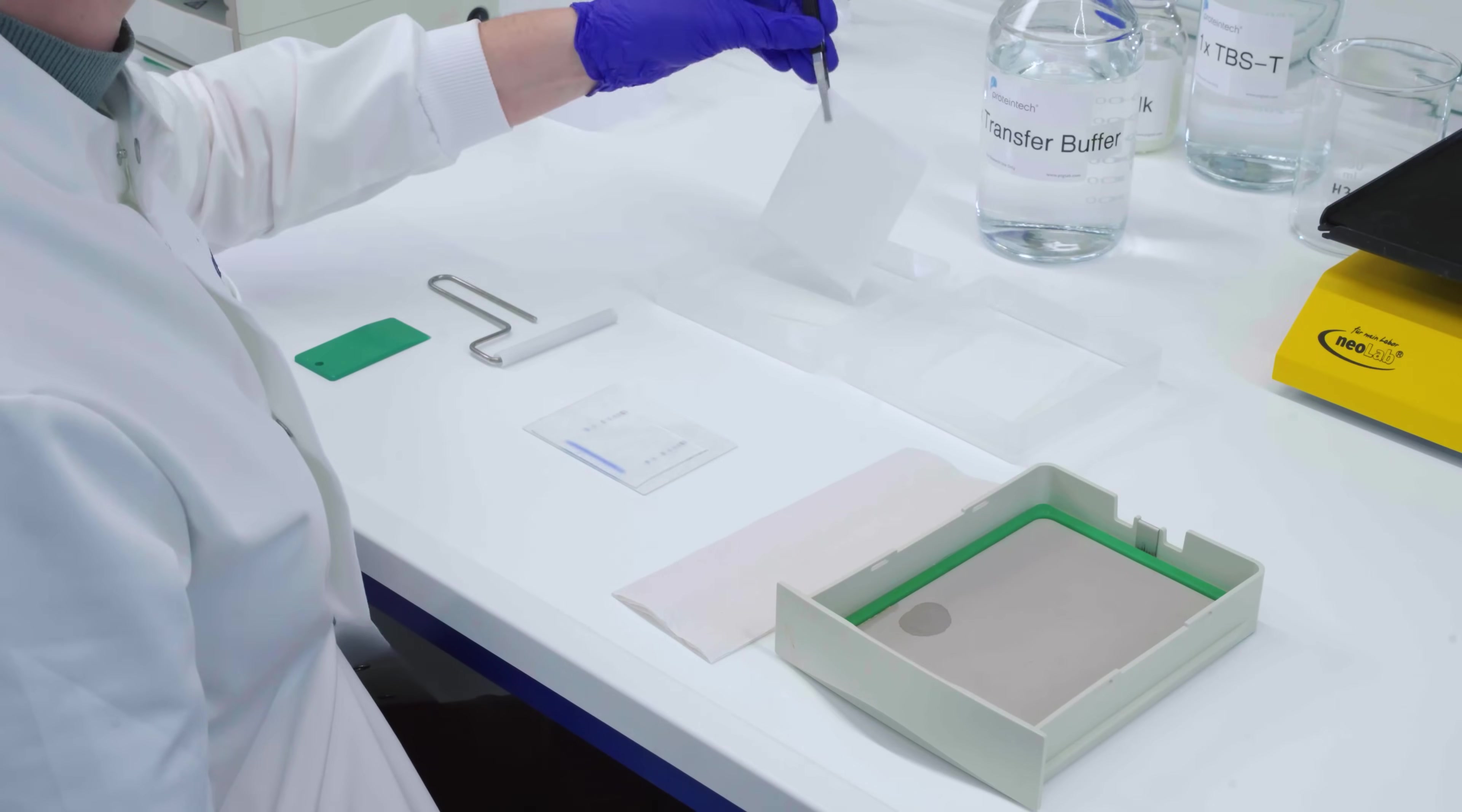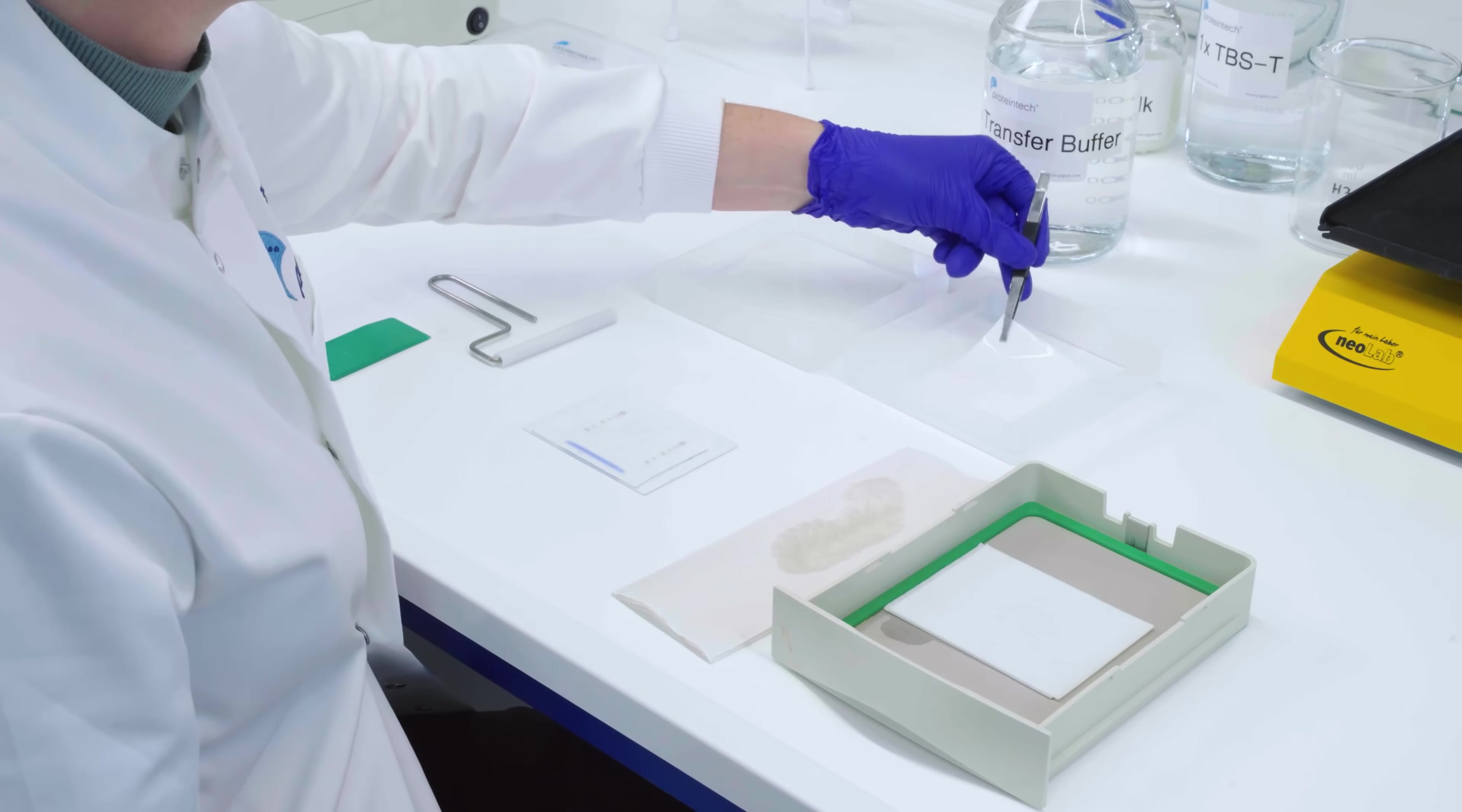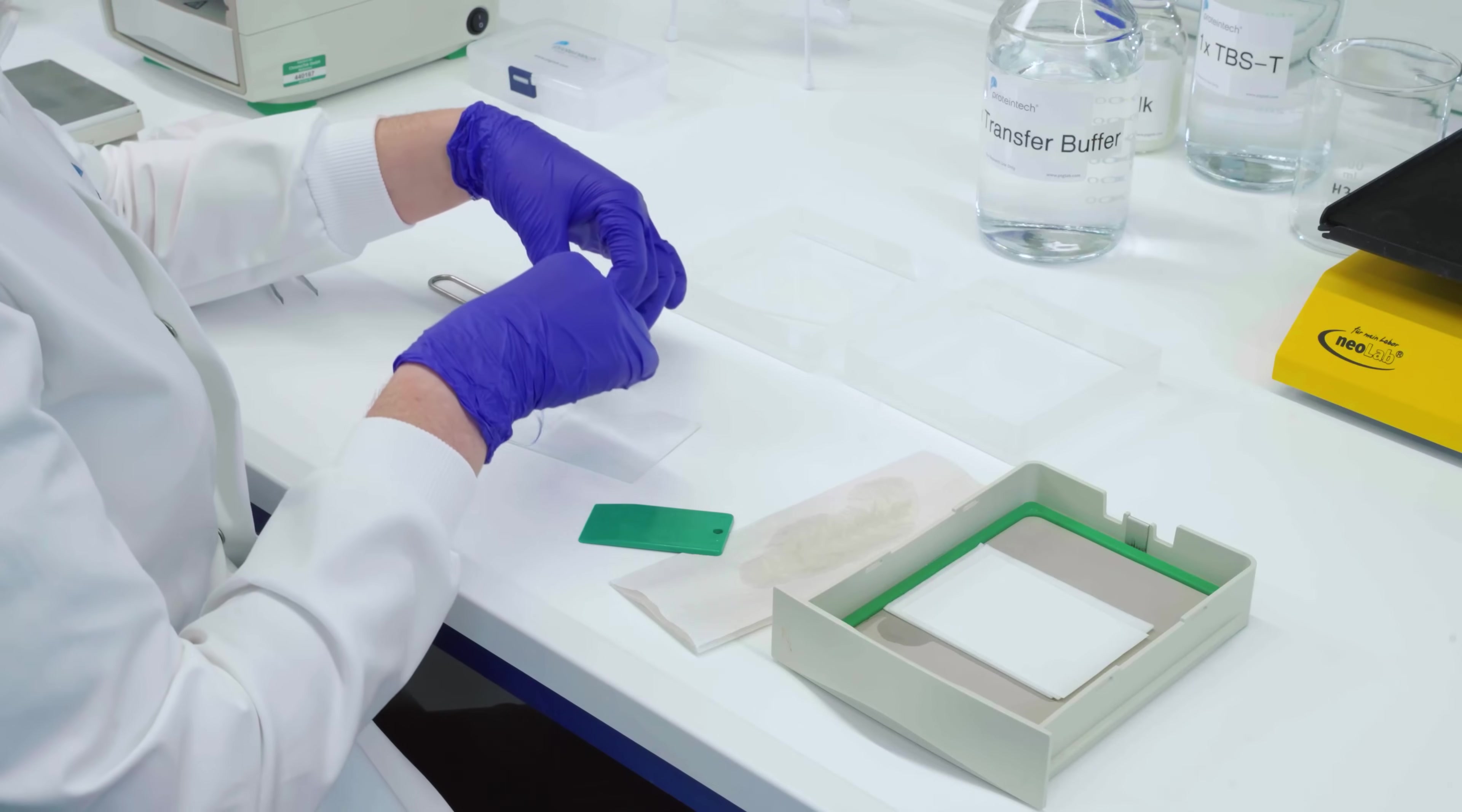To construct the transfer stack, sandwich the membrane and the gel between the gel blotting paper, making sure that the membrane is closest to the positive anode and the gel is closest to the negative cathode. This ensures that the negatively charged proteins move out of the gel and embed themselves into the membrane.